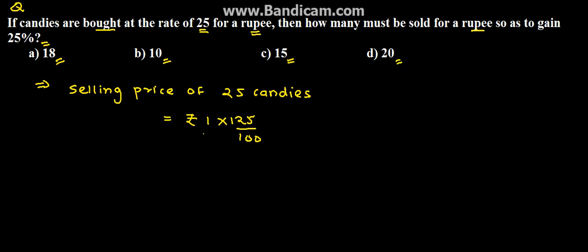Selling price of 25 candies is equal to rupees 1 times 125 upon 100. Why 125 upon 100? Because there is 25% profit and 25 candies are bought at 1 rupee. So we will find the selling price for 25 candies which will come to rupees 5 by 4. So 5 by 4 is the selling price of 25 candies.